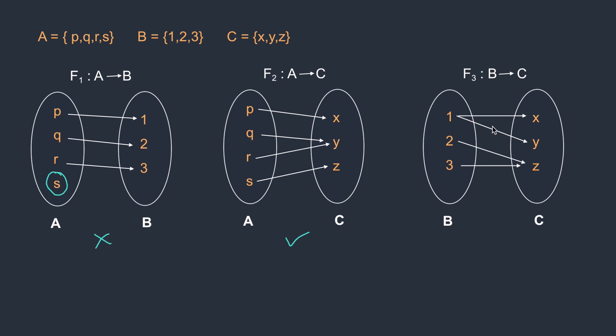Look at this, f3. 1, 2, 3. Each element has a mapping. But this is not a function. The reason is, look at 1. One has been mapped with x and one is mapped with y. So an element is having two images. Therefore, not a function.